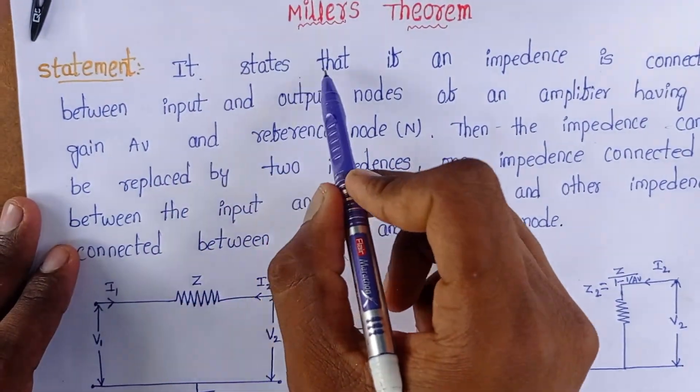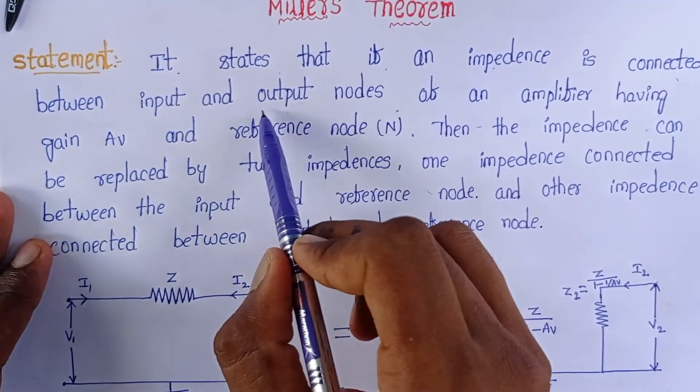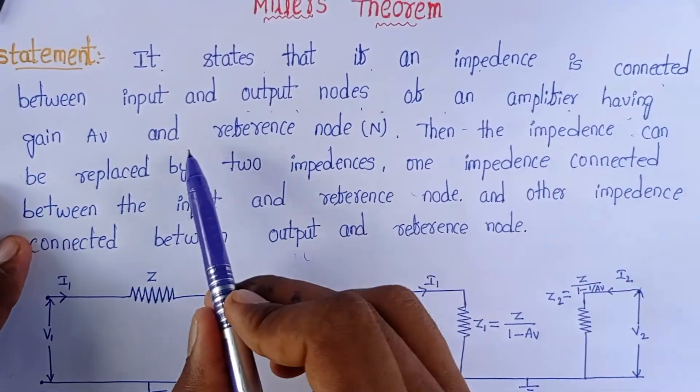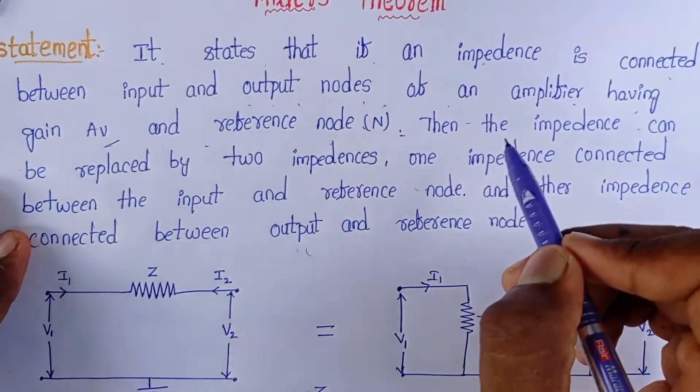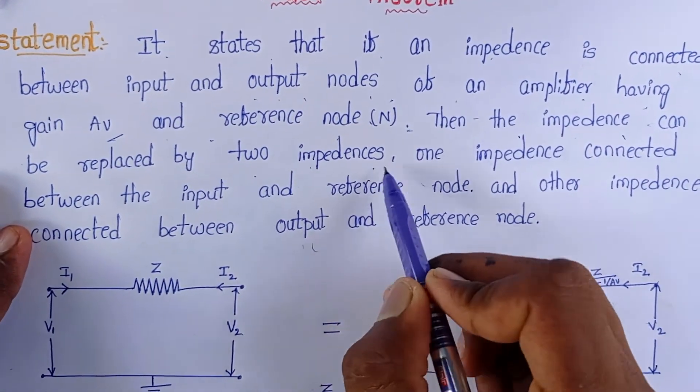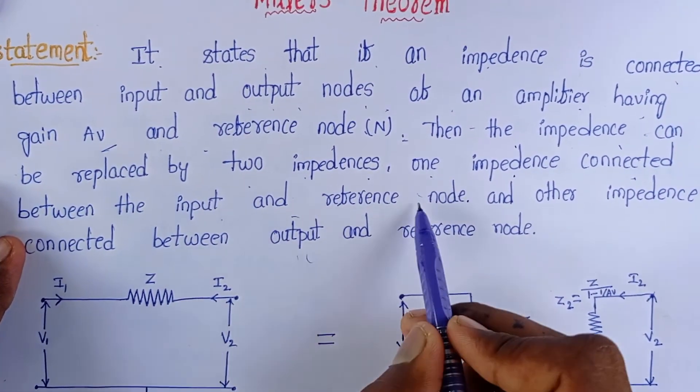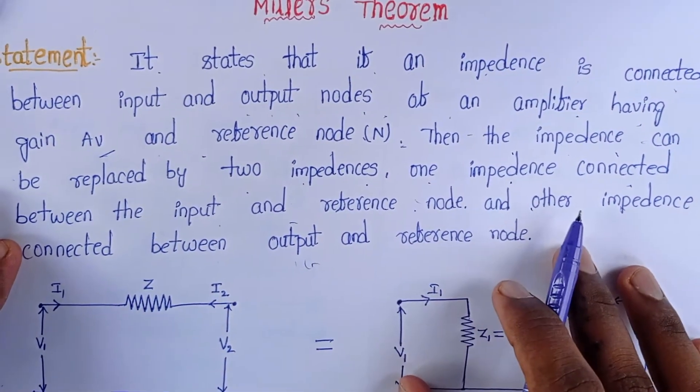It states that if an impedance is connected between input and output nodes of an amplifier having gain Av and reference node N, then the impedance can be replaced by two impedances. One impedance connected between input and reference node and other impedance connected between output and reference node.